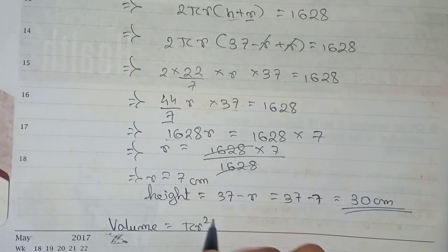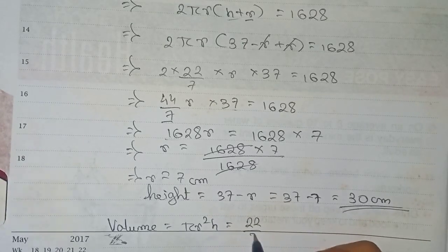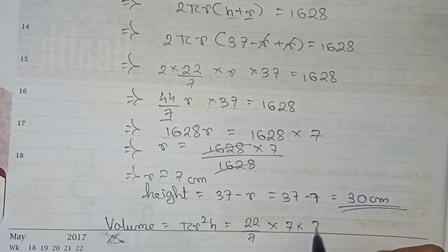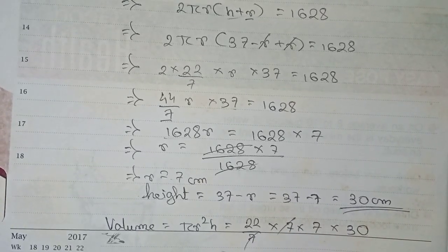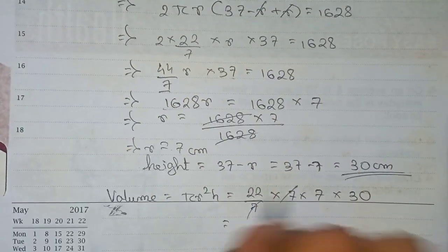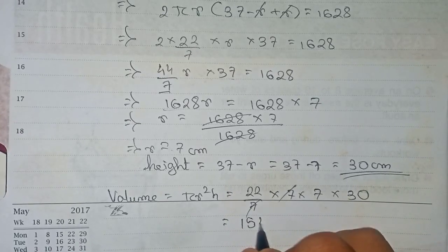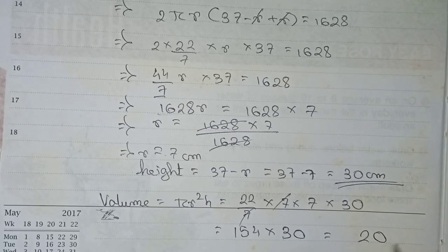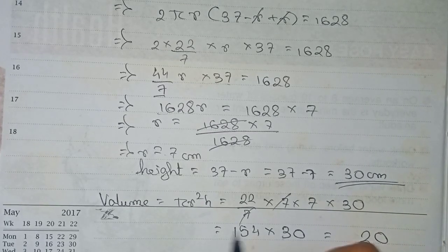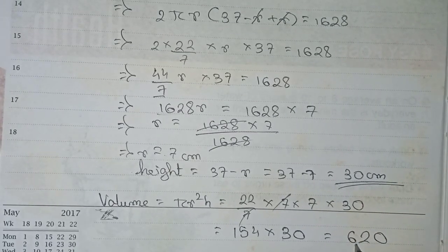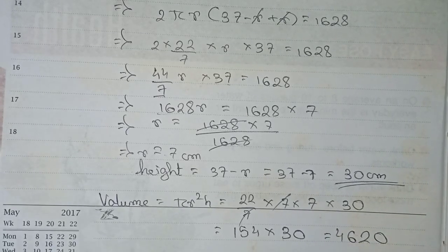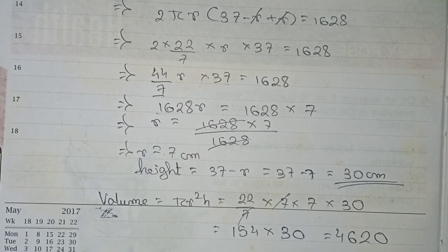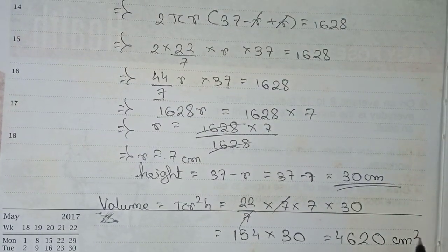Now we calculate the volume. Volume equals π r squared h, so that is 22/7 times 7 squared times 30. The 7 in the denominator and one factor of 7 cancel, leaving 22 times 7 times 30. That gives 154 times 30, which equals 4620 cubic centimeters.